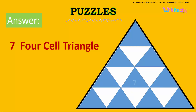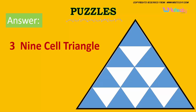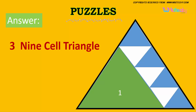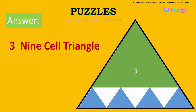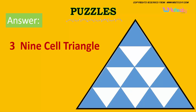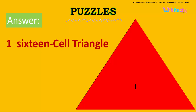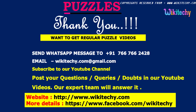And now we got 3 nine-cell triangles: 1, 2, 3. So we got 3 nine-cell triangles and 1 sixteen-cell triangle. This is how the triangles are.